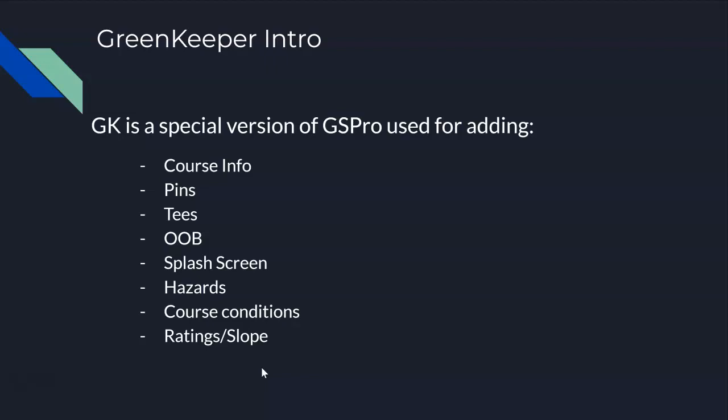You also set your default course conditions. When someone loads up your course, how do you want to recommend they play it? What stimp do you want to recommend? Do you want it to be windy, breezy, or no wind? What wind direction? Those are the course conditions. You're also going to assign the ratings and slopes for all of your tees — whether it's pro black tips or par threes, you assign ratings and slope through Greenkeeper.